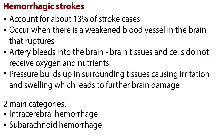Hemorrhagic strokes, or bleeds, account for about 13% of stroke cases. They occur when there is a weakened blood vessel in the brain that ruptures. When an artery bleeds into the brain, brain tissues and cells do not receive oxygen and nutrients. At the same time, pressure builds up in surrounding tissues, causing irritation and swelling, which leads to further brain damage.